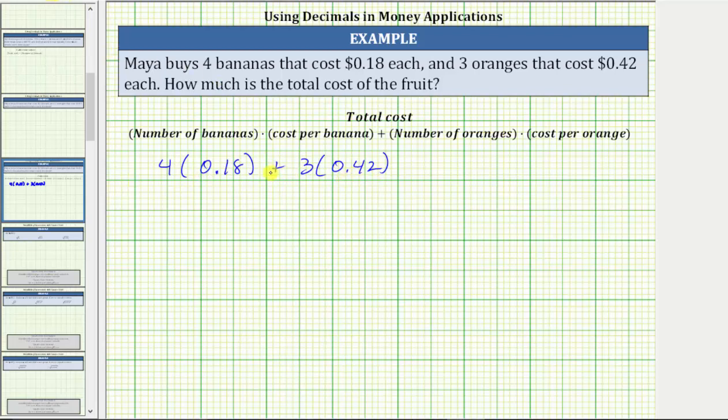To determine the two products, we will use the commutative property of multiplication and change the order of the multiplication. For four times 0.18 we will determine 0.18 times four, and to determine three times 0.42 we will determine 0.42 times three.